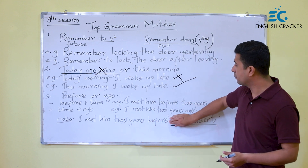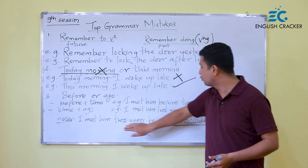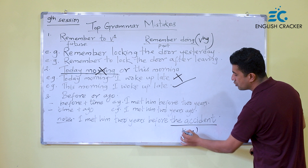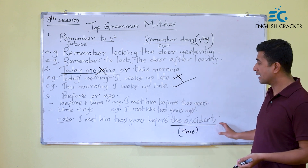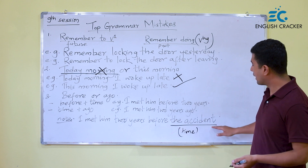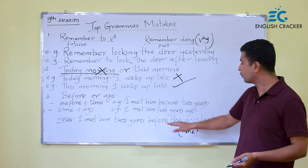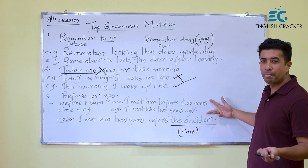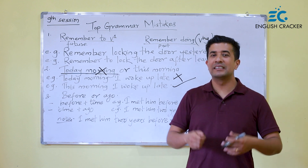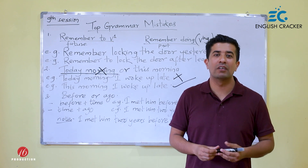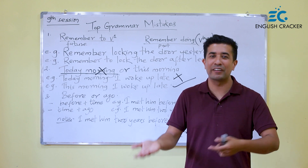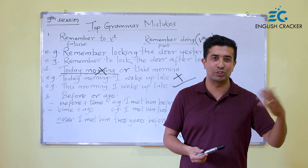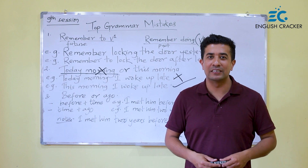However, 'before' is correct when it precedes a reference event: for example, 'I met him two years before the accident.' So, the rule is: use 'ago' with time durations, and 'before' with reference events. I hope you got this. Please subscribe to our channel and don't forget to press the bell icon. Thank you very much.